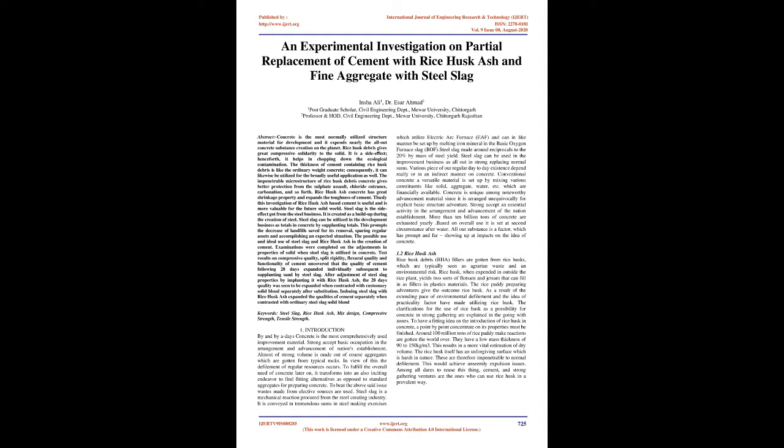To address this issue, wastes from alternative sources are used. Steel slag is a by-product obtained from the steel manufacturing industry. It is produced in large quantities in steel-making processes using electric arc furnaces (EAF) and basic oxygen furnaces (BOF). Steel slag amounts to approximately 20% by mass of steel output and can be used in the construction industry as aggregate in concrete, replacing natural aggregates.